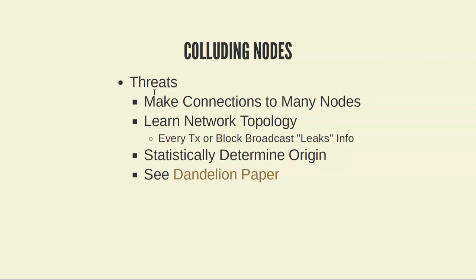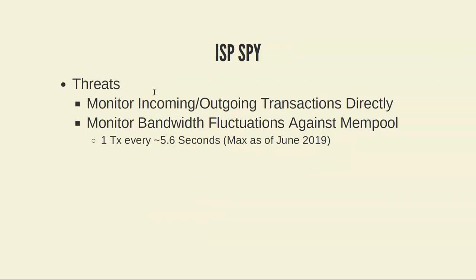The Dandelion paper is probably the best resource on how the first attack works. You make many connections to the network and try to learn the network topology through the P2P protocol — there's basic bookkeeping on how to spread information about peers, which leaks information. Transaction and block broadcasts also leak information because you can see how information flows through the network if you have many connections. Dandelion++ is designed to mitigate this, and I2P and Tor would also mitigate it but in a different way.